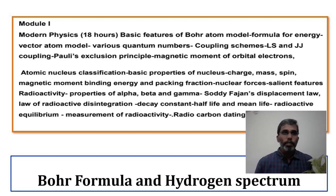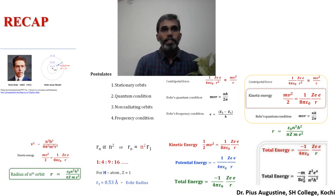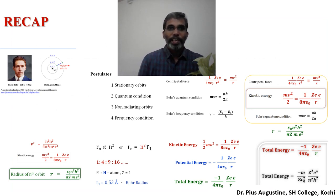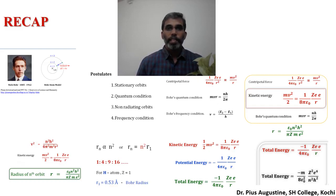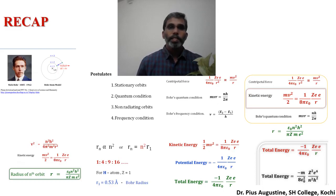First we will see a recap of what we discussed in the last session. The last session's first slide was about Niels Bohr. I had shared a story of finding the height of a building using a barometer. Then various atom models and their drawbacks were analyzed, particularly the Thomson atom model or plum pudding model.